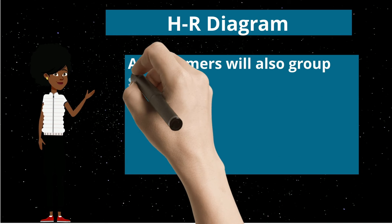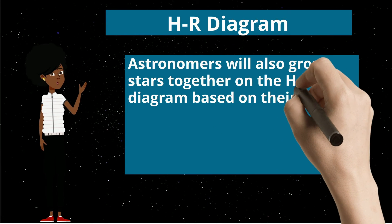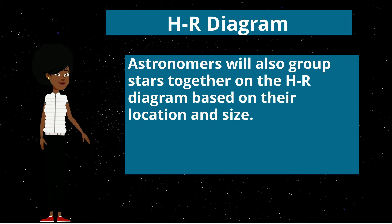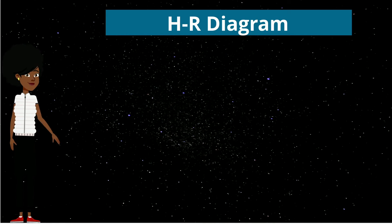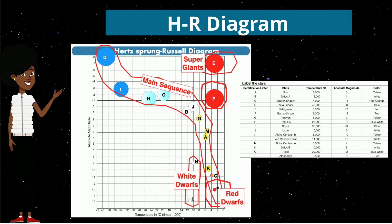Astronomers will also group stars together on the HR diagram based on their location and size. So as you can see on this HR diagram, we have the main sequence stars, the supergiants, the white dwarfs. We can see the sizes and colors of the stars.